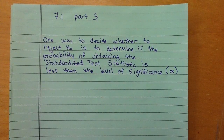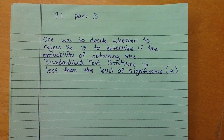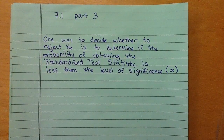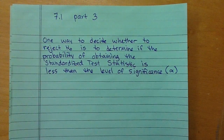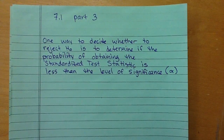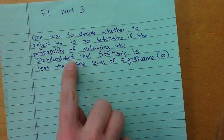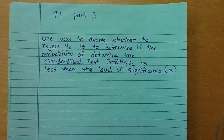One way for us to decide whether to reject the null hypothesis is to determine if the probability of obtaining the standardized test statistic — those z-scores, t-scores, or chi-squared values — is less than the level of significance.